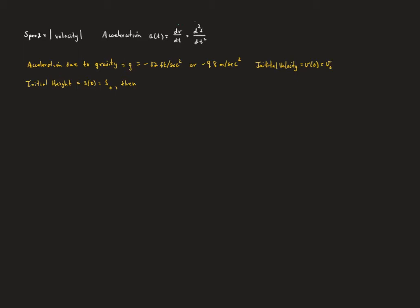So acceleration due to gravity, depending if we're English or metric, in English measure it's going to be negative 32 feet per second squared. That's oftentimes just referred to as g, and then that way you can just, from the context of the problem, decide whether we're metric or in English measure. If we say the initial velocity refers to the velocity at time zero, and if we just use that as our symbol v sub zero, and we call the initial height, the height at time zero, s sub zero, then what we have is kind of a big differential equation.